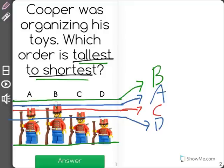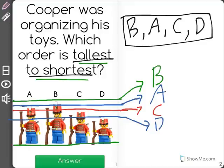So, the correct answer is B is the tallest, then A is the next tallest, then C, then D, who is the shortest Lego guy. That is the order from tallest to shortest.